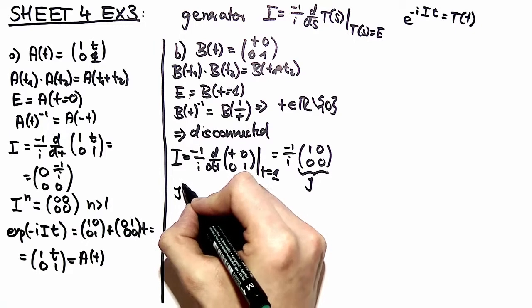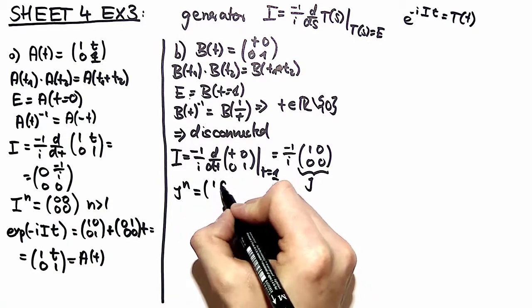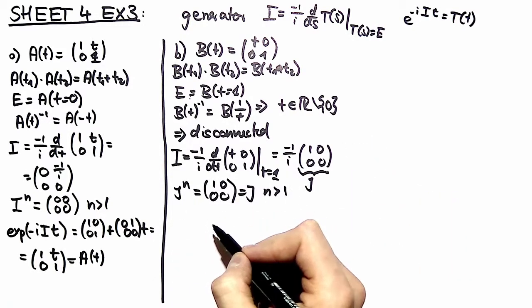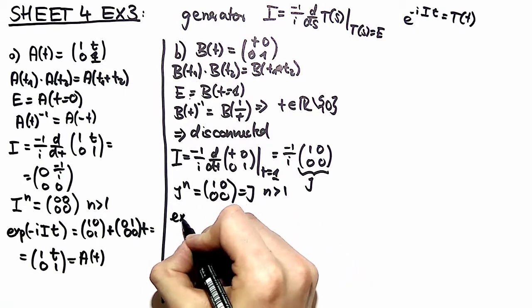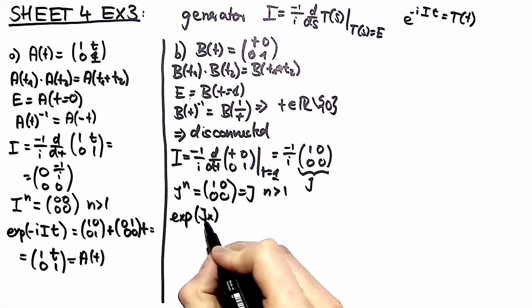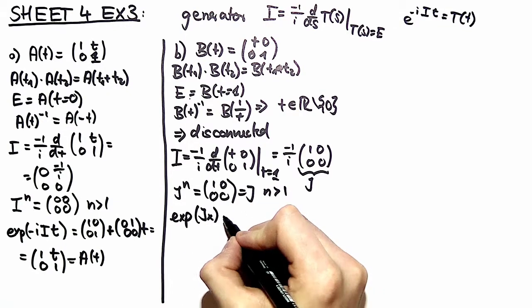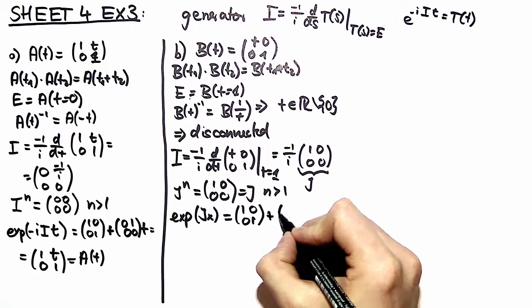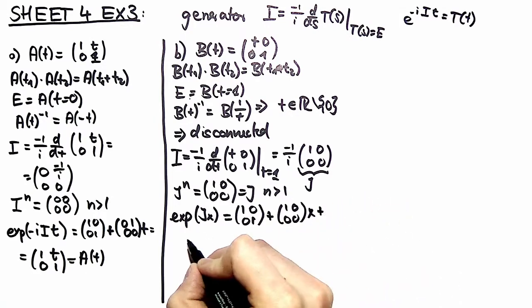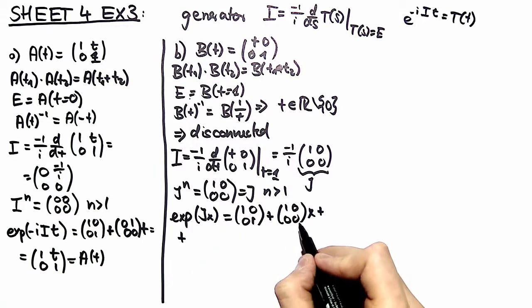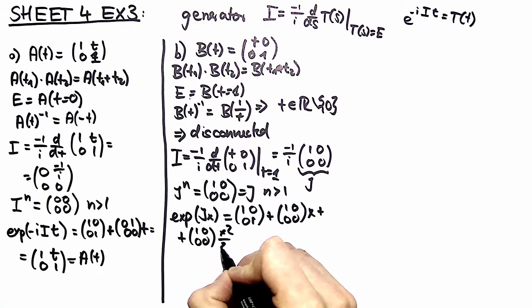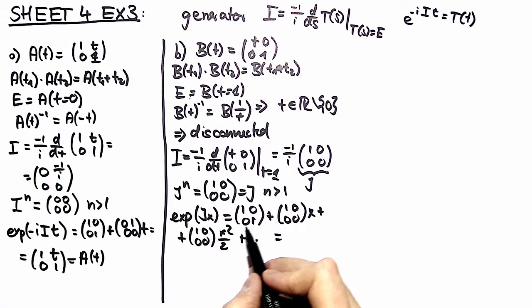And again an important observation is that j to the n is always j and to the 0 of course you have the identity. So therefore we can compute again the exponential. We take x because we have to modify this variable. We have to see the reason for that, we see in a moment. So again we Taylor expand it and then you have always j times your Taylor series exponential over here. So you have again j to the nth times x squared over 2 and so on. And you recognize here an exponential function and here the identity matrix.